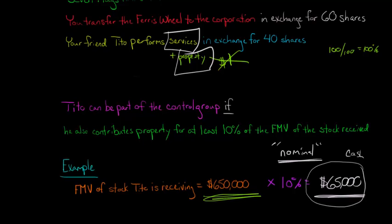Now do you then say, well, Tito didn't contribute all property. It was mostly services. Do we then say, well, we need to take 10% of his 40 shares or something like that? That might be valid thinking, but that's not what we do. We say, all right, if Tito qualifies by meeting that 10% threshold, then we count all 40 of his shares. And so now you've got the control group is you and Tito. So you're contributing 60 shares. He's contributing 40. So you have 100 of 100 shares. You control all 100 shares after you've made the transfer.